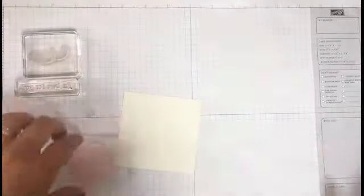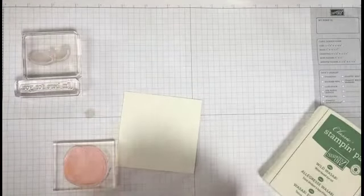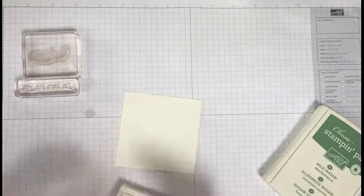So the first thing I'm going to do is just stamp it out as normal and I'm going to use Peekaboo Peach of course for the peach.